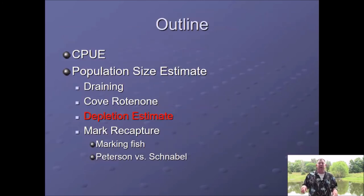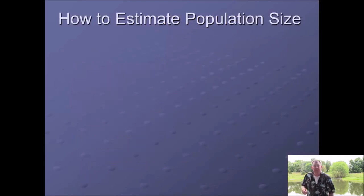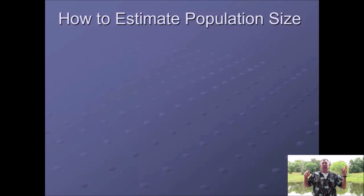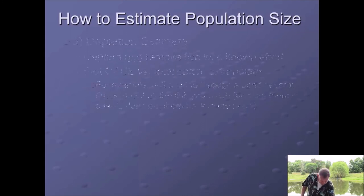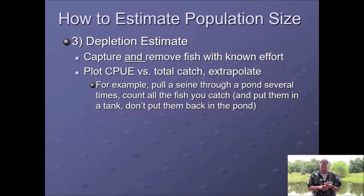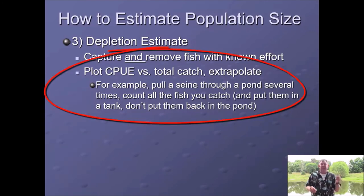The next thing we're going to talk about is called a depletion estimate, and this works on small water bodies like the pond behind me. The idea is that we're going to take a standard series of samples and keep the fish after we sample them — we're not going to throw them back. We're going to deplete the population, and by doing this we can get an estimate of how big that population is. We capture and remove fish with a known amount of effort, giving us a catch per unit of effort, and then we plot that CPUE versus total catch and extrapolate.